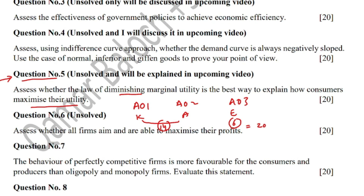For Assessment Objective 1 you have to give knowledge — identify the basic economic terms given in the question statement, and sometimes provide background knowledge as well depending on the nature of the question. Then you analyze the given situation asked by the examiner, and in the evaluation part you have to negate or challenge what you said in the analysis part.